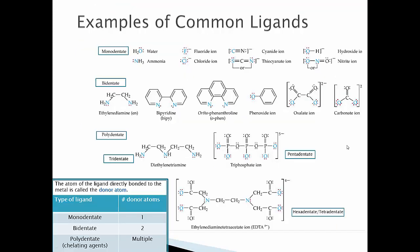Ligands can donate one, two, or many times to the metal. Monodentate ligands have one set of electrons donating in; bidentate have two pairs; polydentate have many. Monodentate examples include water, ammonia, fluoride, chloride, cyanide, thiocyanate, hydroxide, and nitrite. These coordinate only once to the metal.